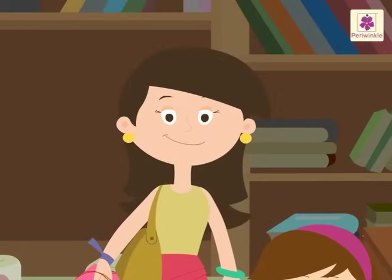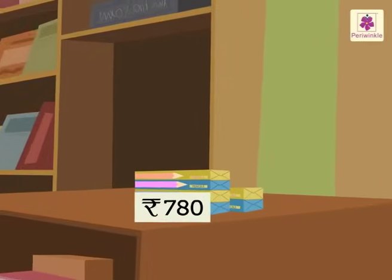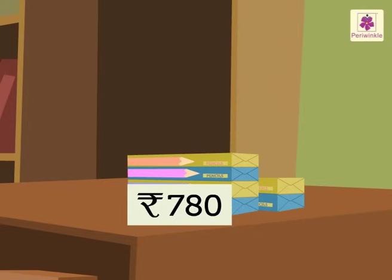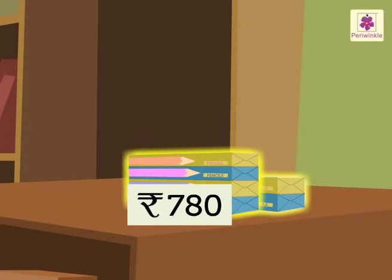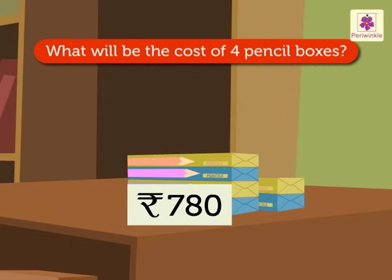Cost of 5 books is rupees 50. Yippee! Let me pay for the books. Now, let's buy some pencil boxes. Look, 6 pencil boxes cost rupees 780. What will be the cost of 4 pencil boxes?